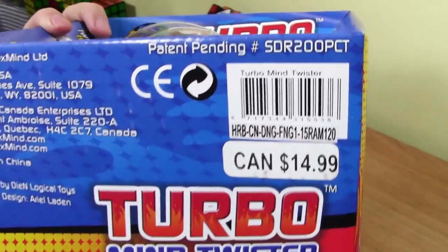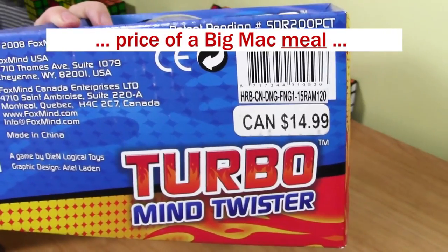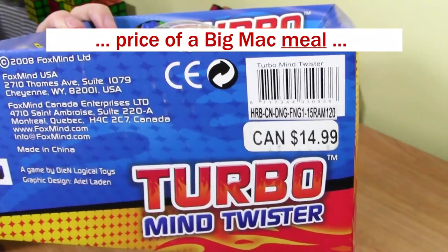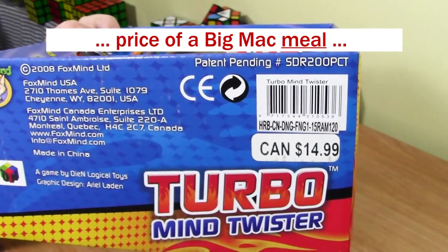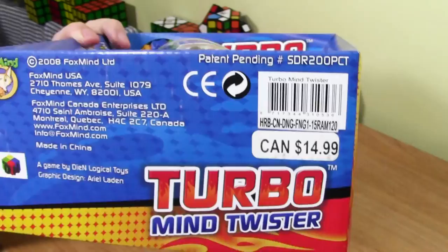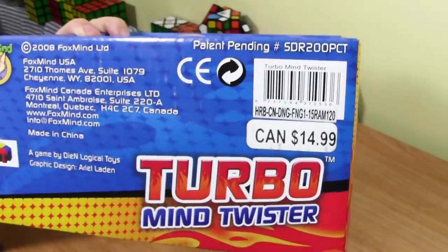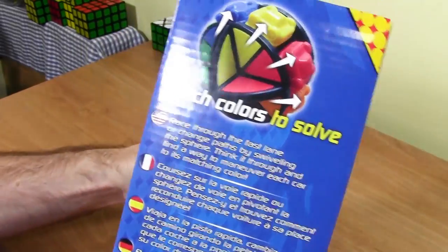And you can see I paid fourteen ninety-nine for it plus tax. So that's about the price of a Big Mac and then maybe an extra burger or an extra fries or something like that, just to put it into universal terms. So you can buy a Big Mac and then a few more things from McDonald's for that price.